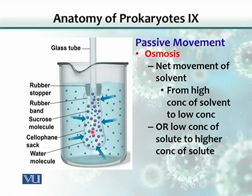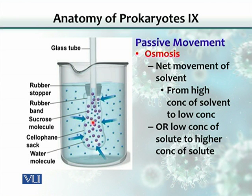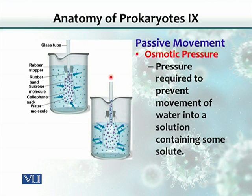After a period of time, the net movement of water from the beaker into the sac and back will become equal — that is the point of equilibrium for water molecules. As water is attracted into the sac by the sugar or salt molecules, the water level in the glass tube rises. The amount of pressure or weight needed to prevent any water movement equals the osmotic pressure. This is how osmotic pressure is calculated in the lab.